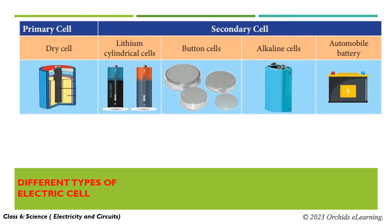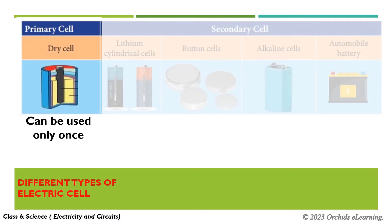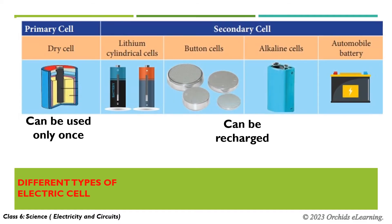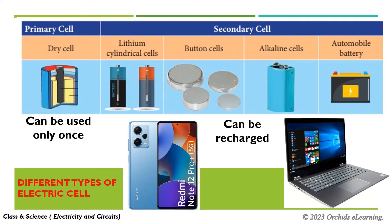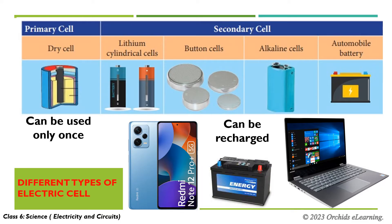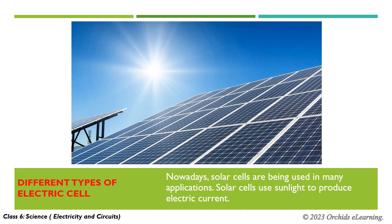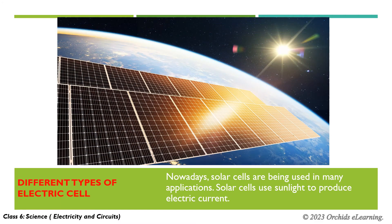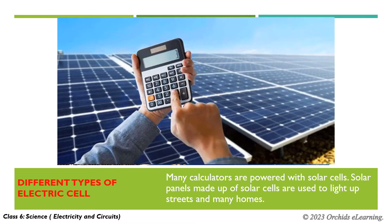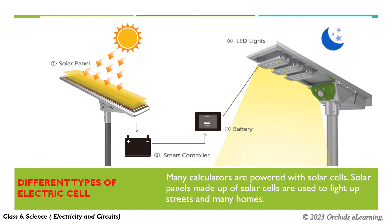Different cells use different methods for producing electric current. Primary cells can be used only once and have to be thrown away once they have been used. There are cells that can be recharged once they are drained — these are called secondary cells. They are used in mobile phones, laptops, and batteries. Nowadays, solar cells are being used in many applications. Solar cells use sunlight to produce electric current. Many calculators are powered with solar cells, and solar panels made up of solar cells are used to light up streets and many homes.